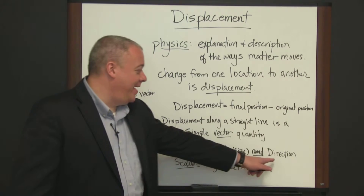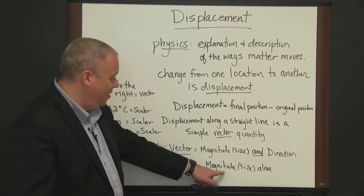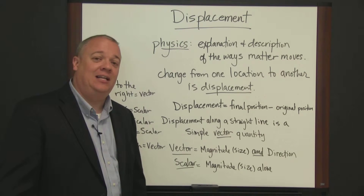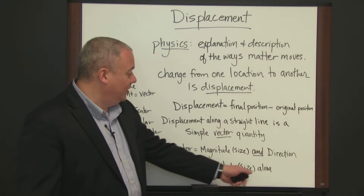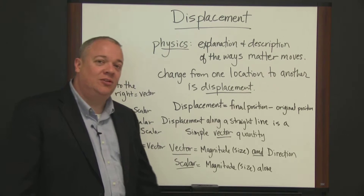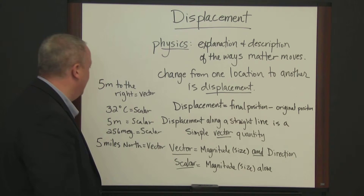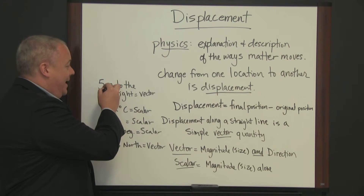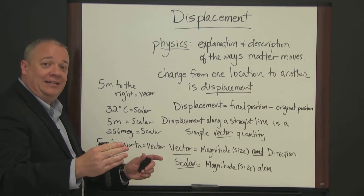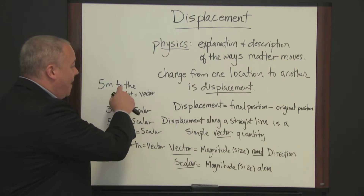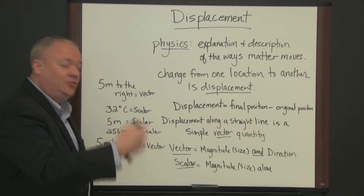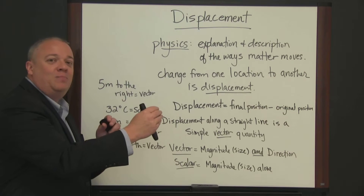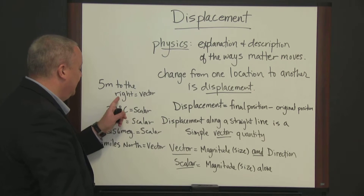Now when we add direction to the magnitude or size, we get what's called a vector. So the difference between vectors and scalars is the difference between having the magnitude alone or having the magnitude plus the direction. I've got some examples here on the board that we're going to look at. If I say something was moved 5 meters to the right, I have both magnitude — the size, in this case the distance moved, 5 meters — plus the direction to the right. 5 meters to the right is a vector because it has both magnitude and direction.